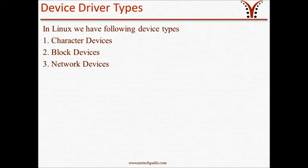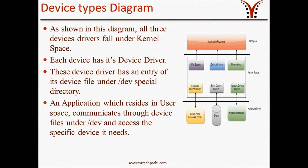Coming to our second topic — device driver types. In Linux, we have the following device types: character devices, block devices, and network devices. As shown in the diagram, all three device drivers fall under kernel space. Each device has its own device driver, and these device drivers have an entry of their device file under the /dev special directory. An application residing in user space communicates through device files under /dev and accesses the specific device it needs.